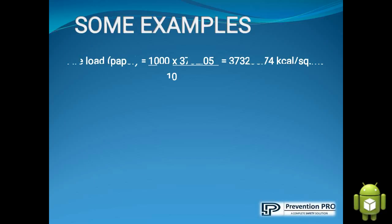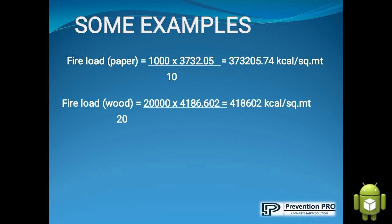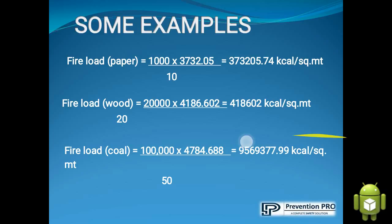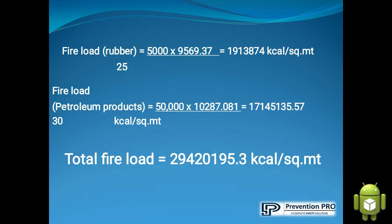Example calculation. Fire load for paper is equal to 1,000 kg of paper multiplied by 3,732.05 calorific value, divided by the area occupied by the paper, which is 10, giving a result of 373,205.74 kilocalories per square meter. And similarly for wood, coal, rubber, and petroleum product.